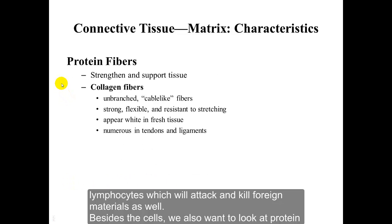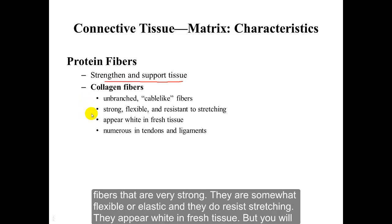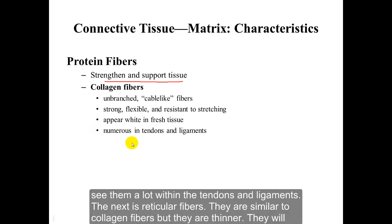Besides the cells, we also want to look at protein fibers. The fibers' function is to strengthen and support the tissue. Collagen fibers are unbranched, cable-like fibers. They are very strong, somewhat flexible or elastic, and they resist stretching. They appear white in fresh tissue, and you will see them a lot within the tendons and ligaments.